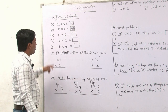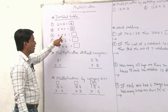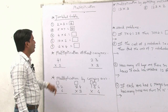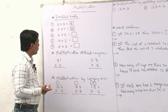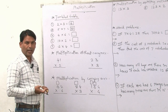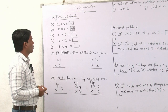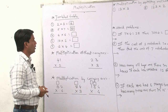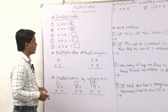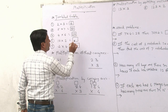After that, table of 4 up to 6. Count: 4 ones are 4, 4 twos are 8, 4 threes are 12, 4 fours are 16, 4 fives are 20, 4 sixes are what? 24.